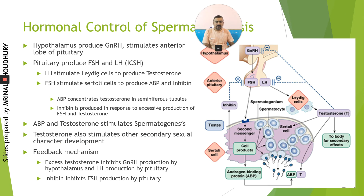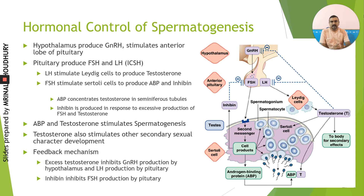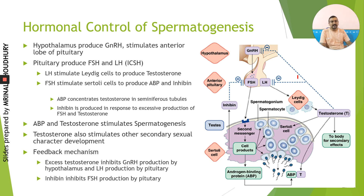A very important topic is the hormonal control of spermatogenesis. The gametogenesis process is a very intricately balanced hormonal regulatory process. Mainly there are two hormones — FSH and LH — which are pituitary hormones, secreted only when stimulated by the hypothalamus. The hypothalamus releases gonadotrophin releasing hormones, FSH-releasing hormone and LH-releasing hormone, which stimulate the anterior lobe of the pituitary to secrete FSH as well as LH.